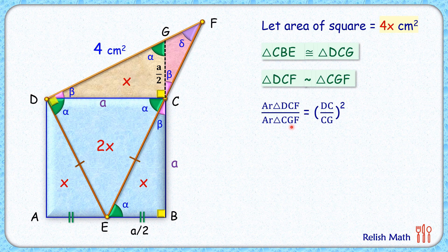Area CGF will be 4 minus x, so LHS we are getting is 4 upon 4 minus x. DC is a and CG is a by 2. Simplifying, we get 4 upon 4 minus x equals 4.